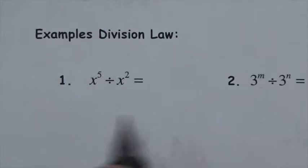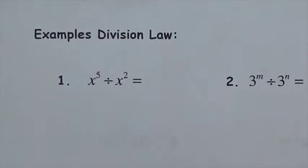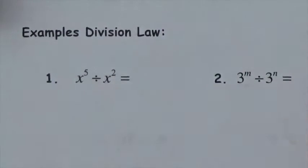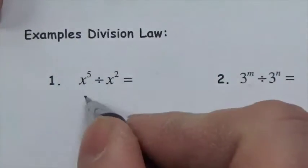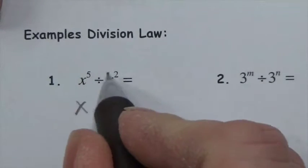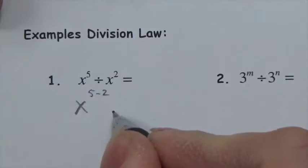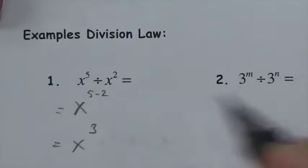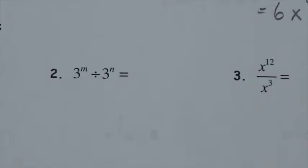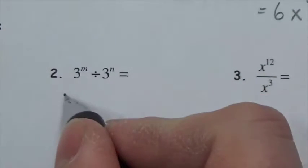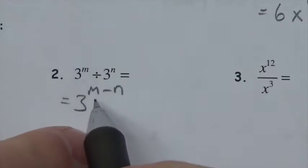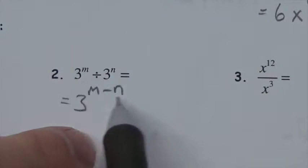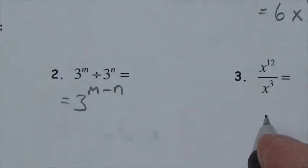Examples of the division law: x to the fifth divided by x squared — subtract the exponents, 5 minus 2 gives x cubed. For 3 to the m divided by 3 to the n, I don't know the exponents, so the best I can do is identify that I would need to subtract m minus n to complete this operation.